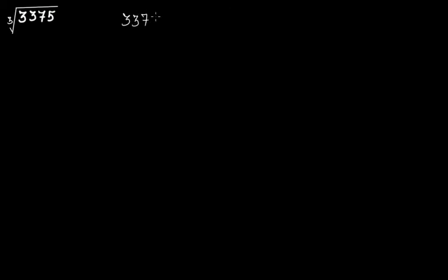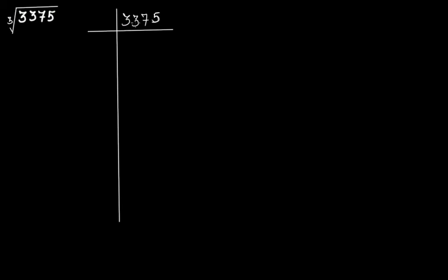Now we have 3,375. You have to find out the cube root of 3,375 using prime factorization method. First check whether this number is divisible by 3 or not. We add up all the digits: 3 + 3 is 6, plus 7 is 13, plus 5 is 18. Yes, this number is divisible by 3 because the sum of digits is 18 and 18 is divisible by 3.